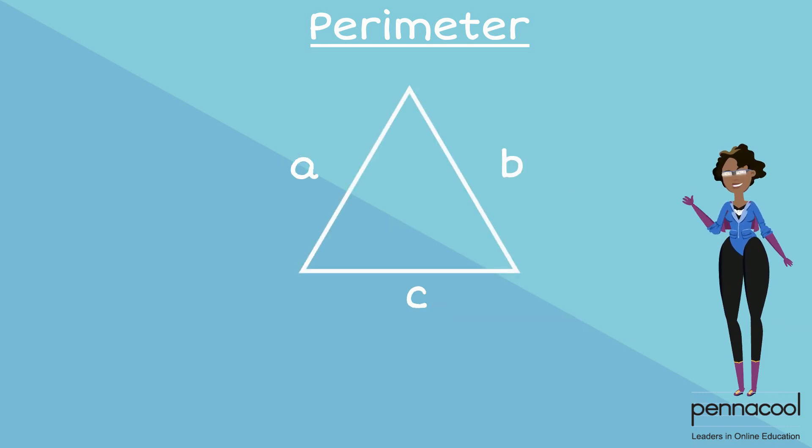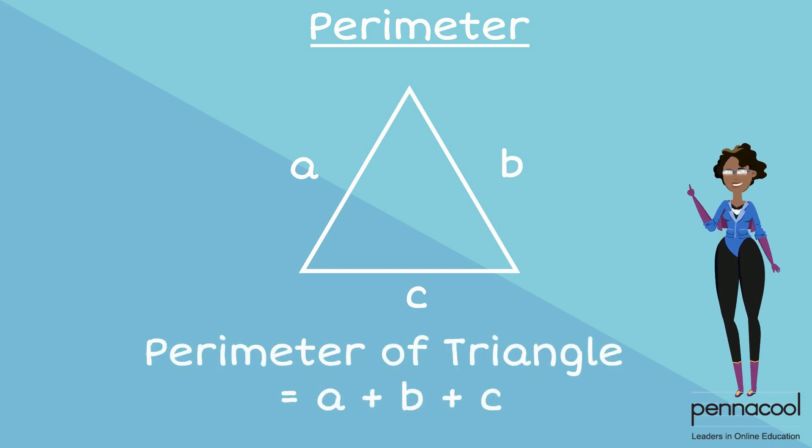Triangles have three sides. We add the length of all three sides to determine its perimeter. Our perimeter will be A plus B plus C.